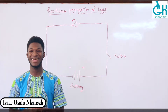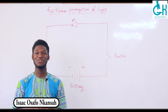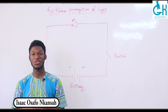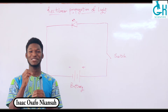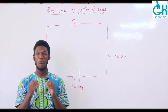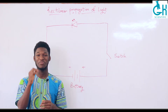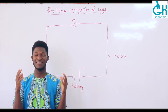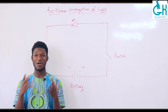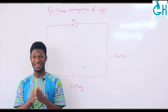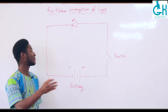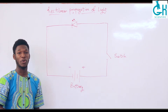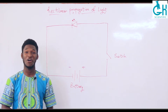Hello there, welcome to today's session with GA Scientific. Today we'll be exploring one fundamental principle of light, which is the fact that it travels in a straight line. This is properly known as the rectilinear propagation of light.